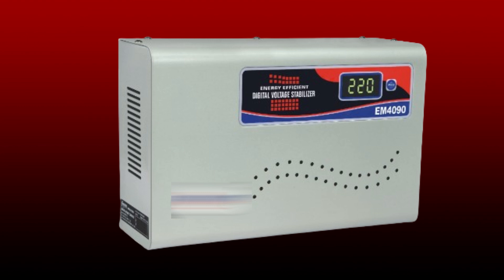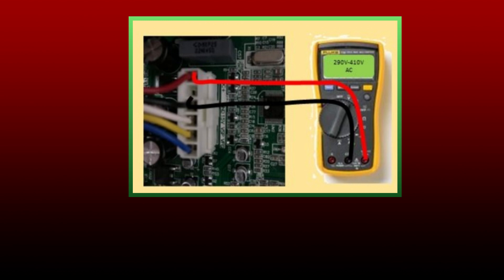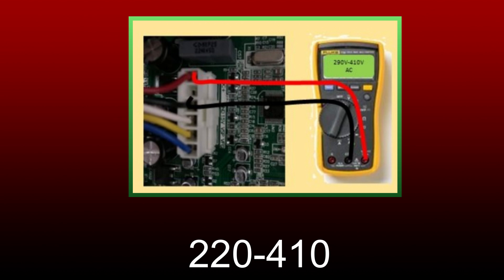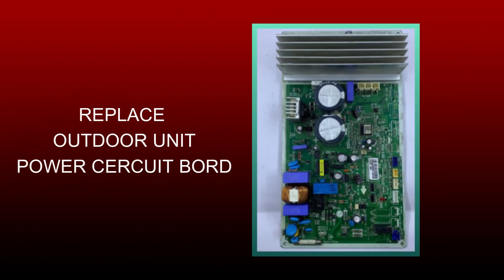If the voltage of your house is fine and still this error is coming, there could be another reason. Turn off the main switch, open the PCB of the outdoor unit, then turn on the AC and check the voltage at the connector of the fan motor. If the voltage is too low or too high from 220 volts to 410 volts, then your outdoor PCB is faulty and you need to replace it. This error will be completely resolved after replacing the PCB of the outdoor unit.